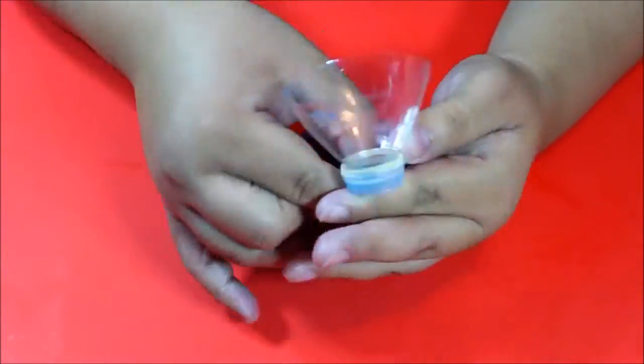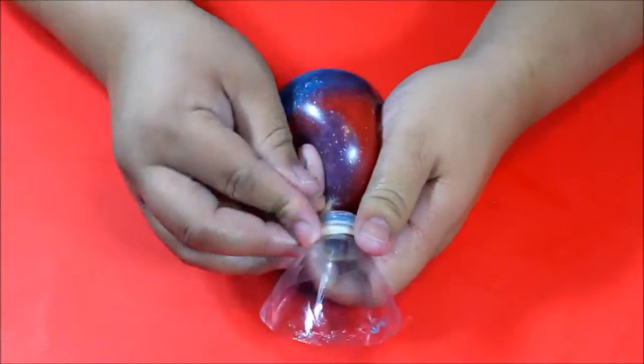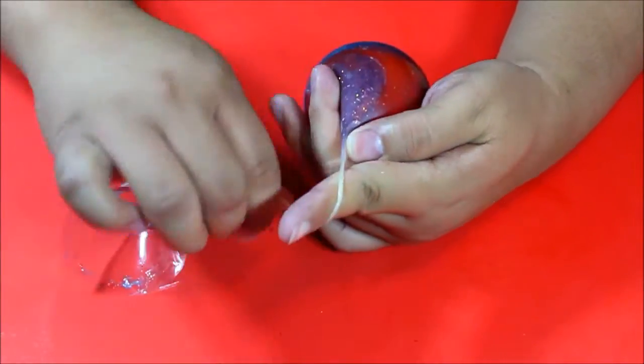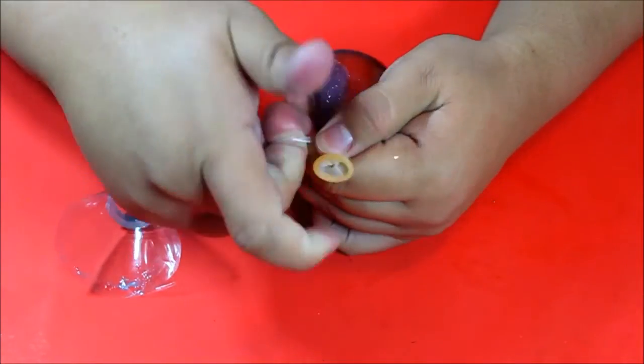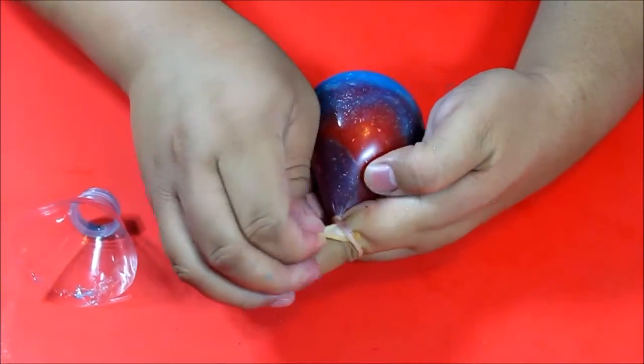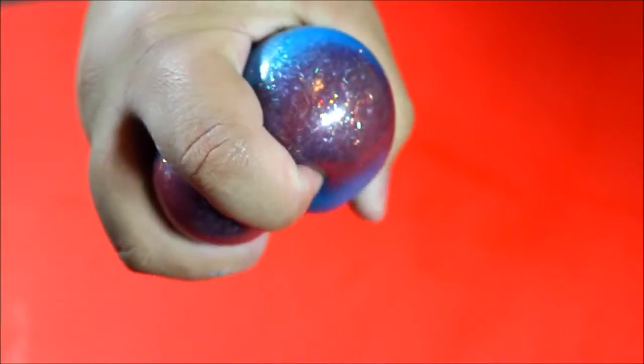And kind of shape it the way you're wanting it to look. And then I just twisted it to make sure nothing came out, and then I am going to tie that baby off. And that is all there is to your very own galaxy stress ball.